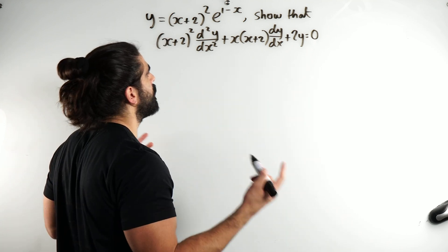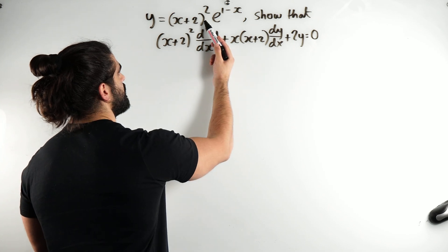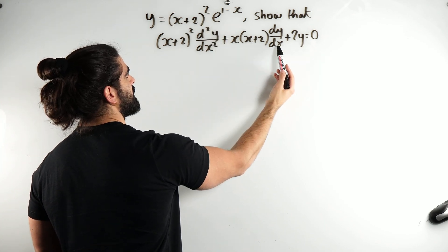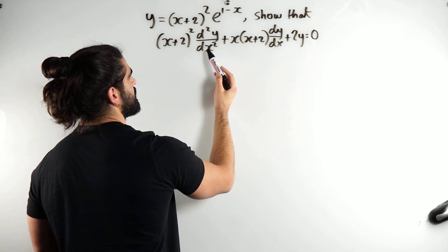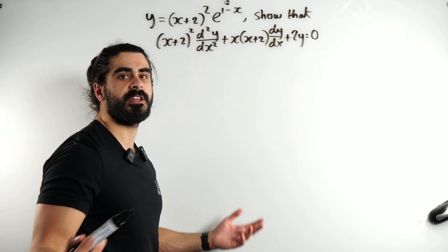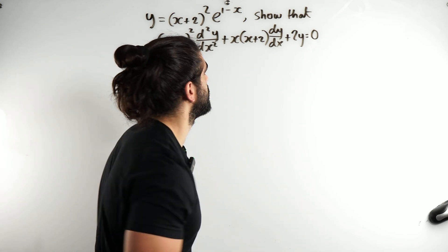All we need to do is take this, sub it into there, take its differential sub into here, take its second differential sub into here, show that everything cancels out, make equal to 0, nice and easy 2 mark question.